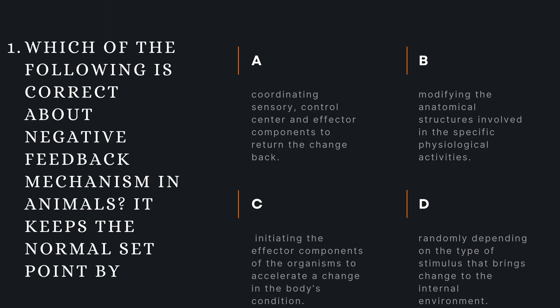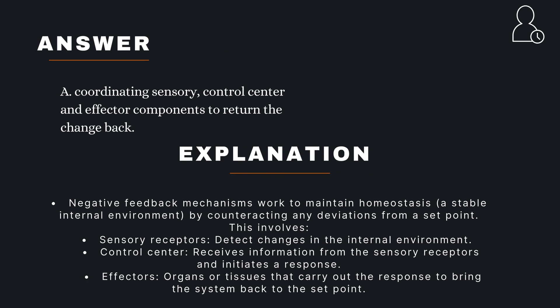Question 1. Which of the following is correct about negative feedback mechanism in animals? A: It keeps the normal set point by coordinating sensory control center and effector components to return the change back. B: Modifying the anatomical structures involved in the specific physiological activities. C: Initiating the effector components of the organisms to accelerate a change in the body's condition. D: Randomly depending on the type of stimulus that brings change to the internal environment. The correct answer is A — coordinating sensory control center and effector components to return the change back.